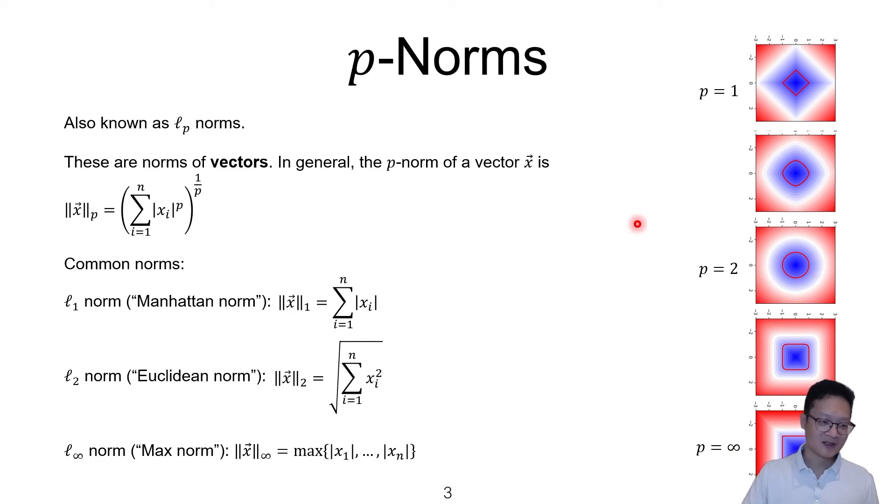Okay, so this is the most general definition of the p-norm, and then these are the most common ones. If you look at these diagrams, you can kind of see that the 1-norm is always greater than or equal to the 2-norm, which is always greater than or equal to the infinity-norm.